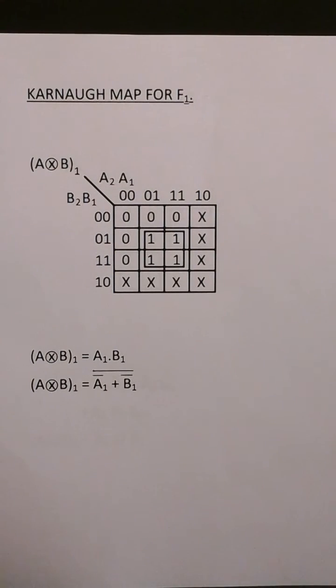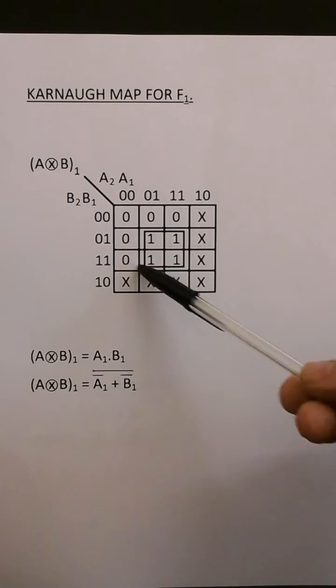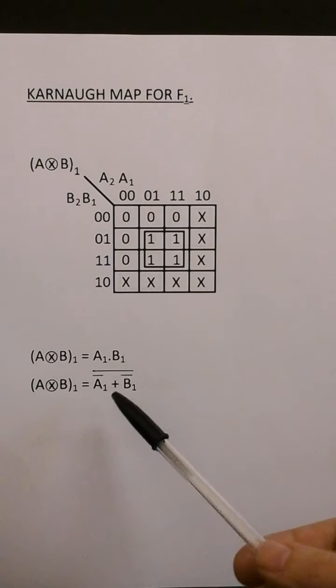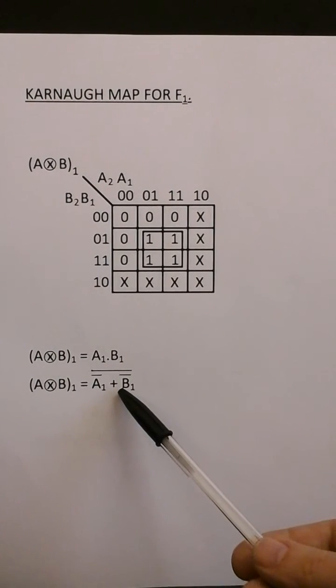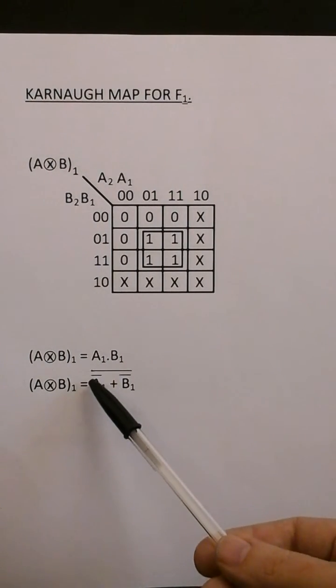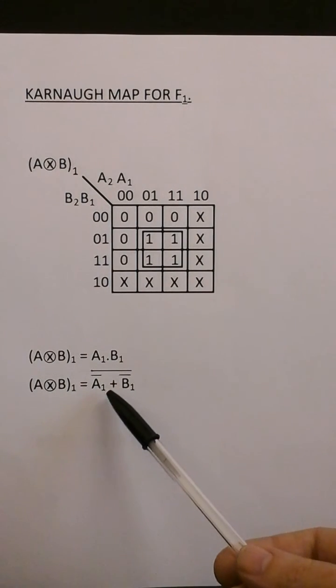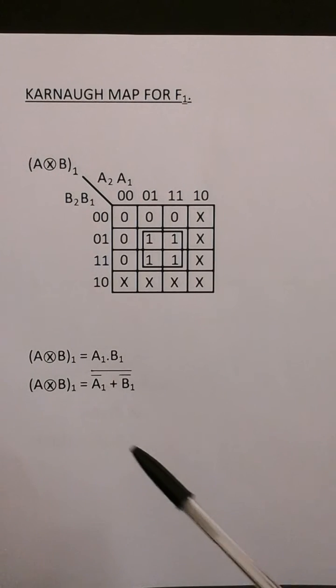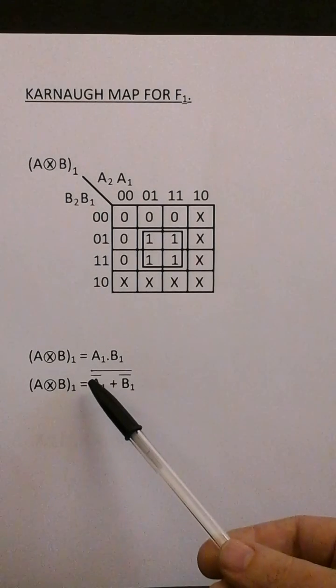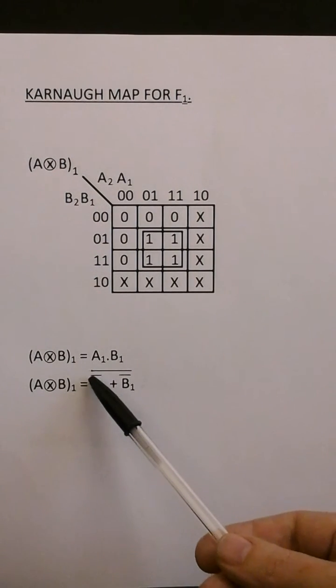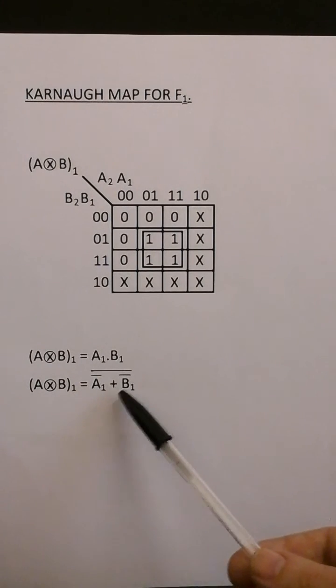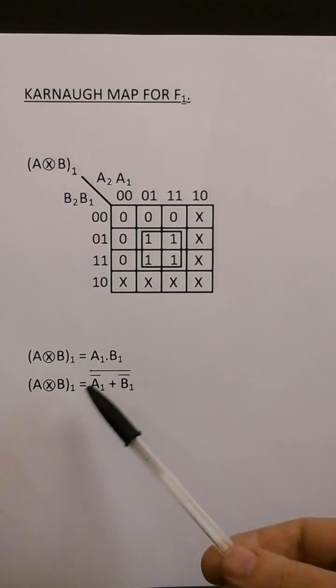This is the Karnaugh map for F1. Here we have just straight simple A1 and B1. But I've used De Morgan's theorem and I've complemented A1 and B1. So I've used a nor circuit. The reason I've done that is because I can just use one inverter for each input, A1 and B1.